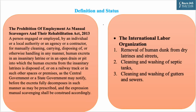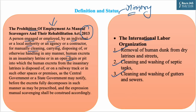As per the Prohibition of Employment as Manual Scavengers and their Rehabilitation Act 2013, a manual scavenger means a person engaged or employed by an individual, local authority, or any agency for manually cleaning, carrying, disposing of, or otherwise handling human excreta in insanitary toilets or in an open drain. The International Labour Organization has segregated manual scavenging into three parts: first, removal of human dump from dry toilets; second, cleaning and washing of septic tanks; and third, cleaning and washing of gutters and sewers.